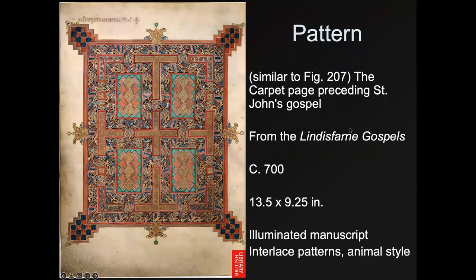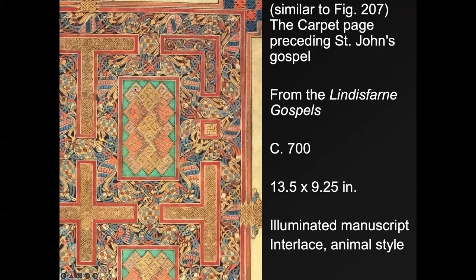Pattern is something we've touched on but not quite addressed directly. We talked about rhythm, which is similar, but pattern is more specific. We're looking at the Carpet Page preceding St. John's Gospel in the Lindisfarne Gospels — it's called the carpet page because it looks like a carpet. This is an illuminated manuscript, meaning a hand-painted book. They use interlaced patterns — you can almost follow them as they lace into each other — and little animals are made by those interlaced patterns. When you get closer, you can really see all the interlaced patterns and almost follow them as if they're real three-dimensional objects.